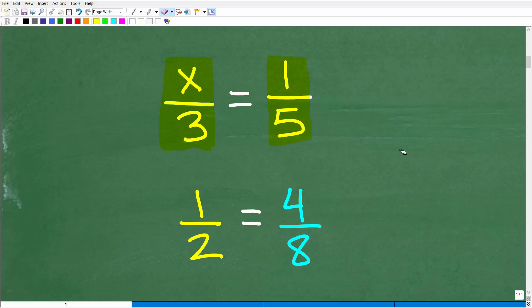And again, a proportion is two equal fractions. So let's check out this example right here. Here is a fraction, one half. Okay. Can we think of another fraction that is equal to one half?